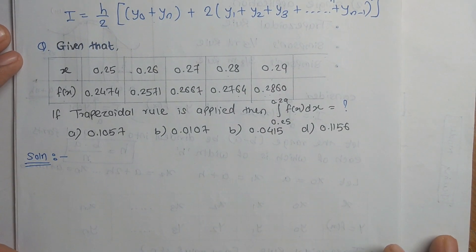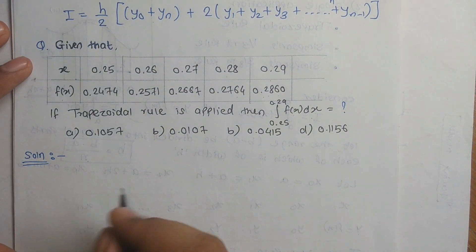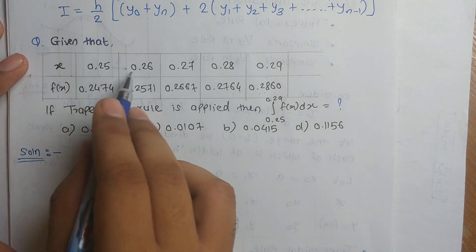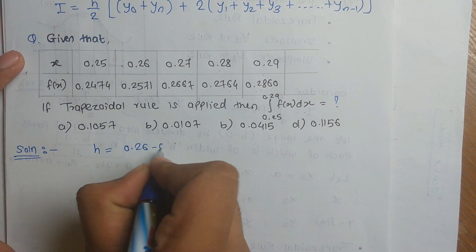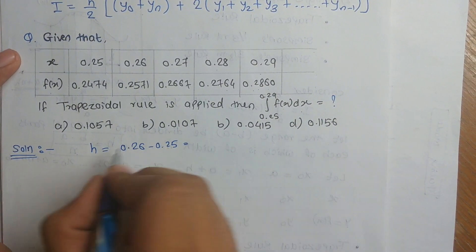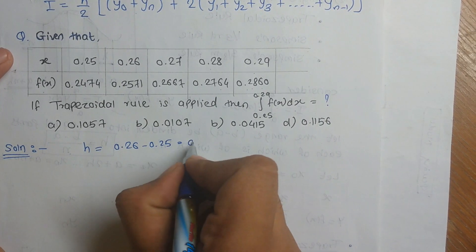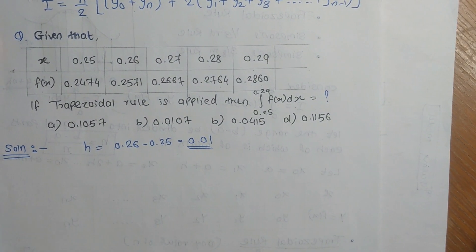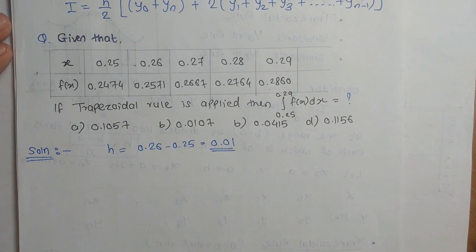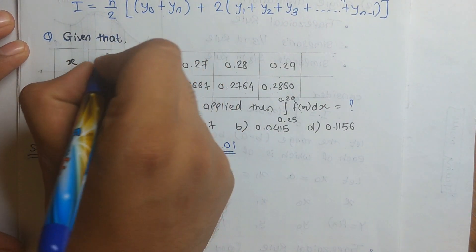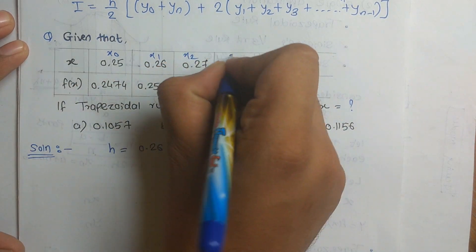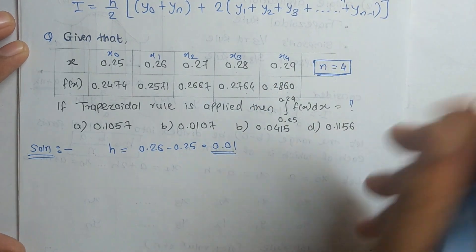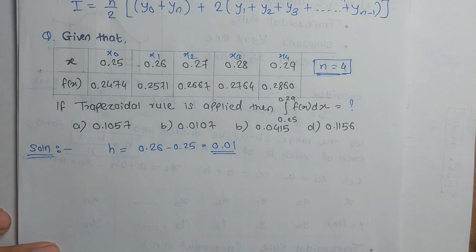To apply the rule, first find h. The strip size h is found by subtracting consecutive x values: 0.26 minus 0.25 equals 0.01. So h equals 0.01. We then label the x values: x₀ = 0.25, x₁ = 0.26, x₂ = 0.27, x₃ = 0.28, x₄ = 0.29. Since the last index is 4, we know n equals 4.